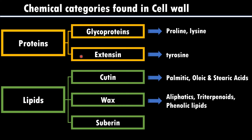When it comes to the lipid profile of the cell wall, we can see cell walls made up of cutin, waxes, and suberin. Suberin is a pure chemical, whereas cutin and waxes are mixtures of different components. In cutin we can observe palmitic, oleic, and stearic acids, whereas in waxes we can observe aliphatic triterpenoids and phenolic lipids.